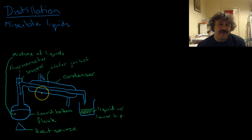Then, we have a way to separate miscible liquids, and the most common example of that is distillation. Basically, you've got a mixture of liquids here in your round-bottom flask and a heat source there.